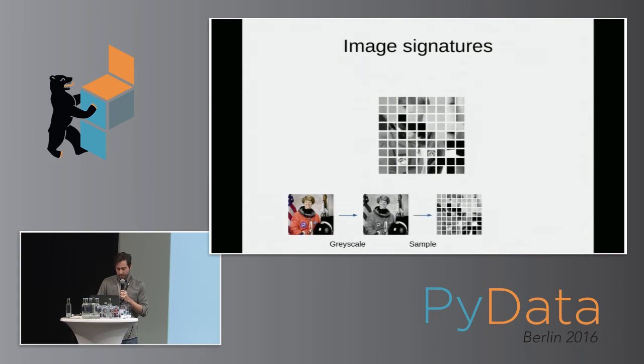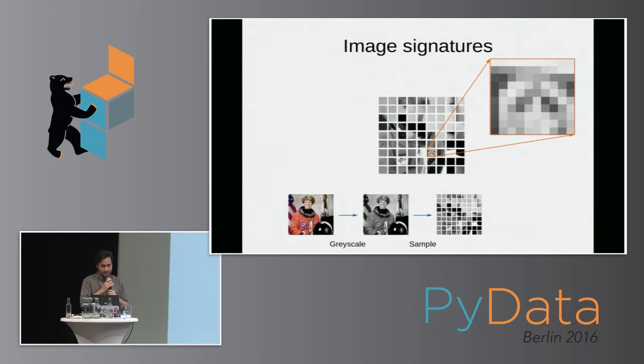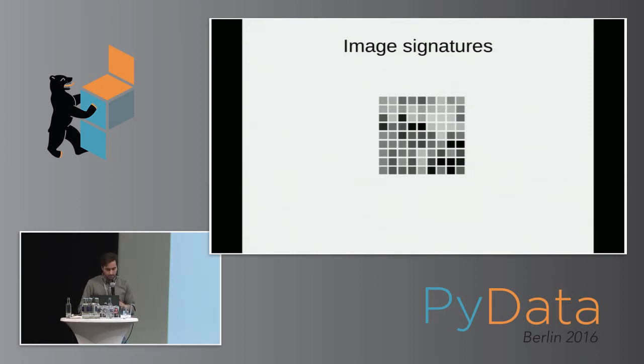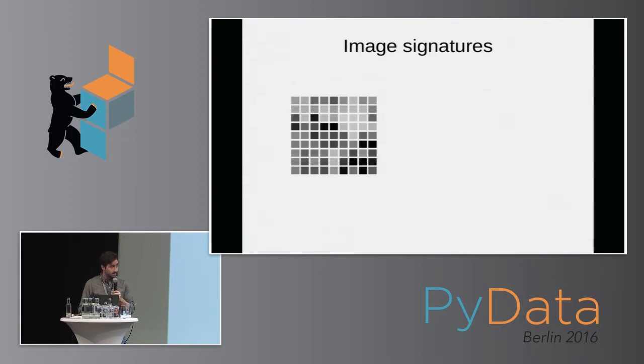And then we sample it. This is just zoomed in. Then we smooth over each one of those zones and get one grayscale pixel. We've reduced this image now to this block of shades. So what do we do with that then? It's still not something a computer can understand. We have to make the signature somehow.